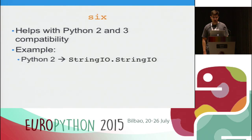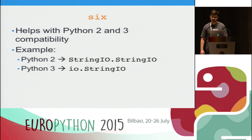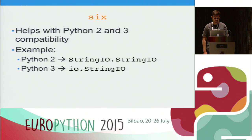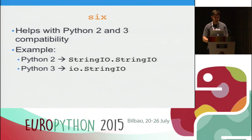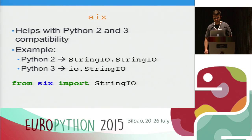Here's an example: the class StringIO, which wraps data into a file-like object. In Python 2, you import it from the StringIO library, but in Python 3 you import it from the io library. If you wrote Python 2-style imports and ran on Python 3, you'd get import errors. Fortunately, the solution is simple — thanks to six, you can just import StringIO directly from the six library.